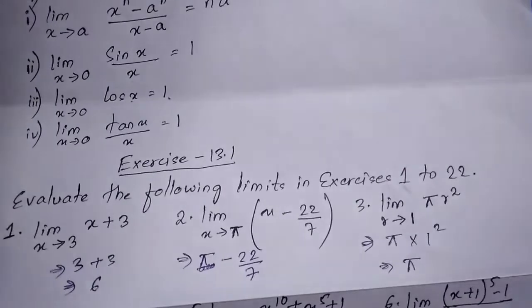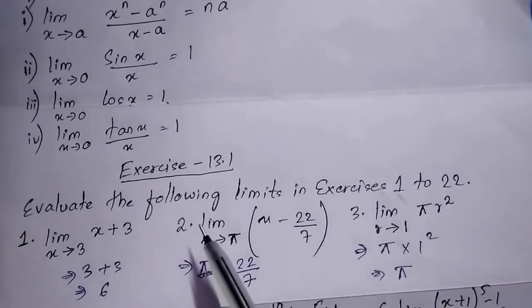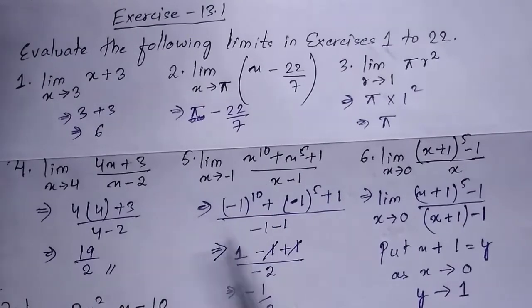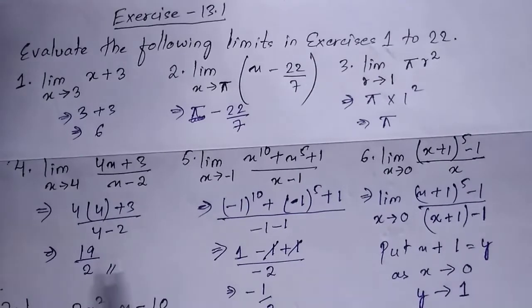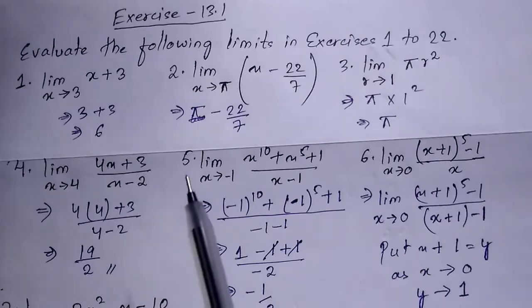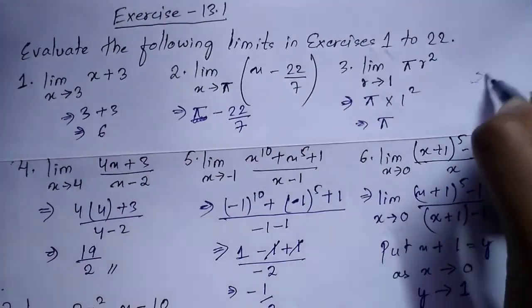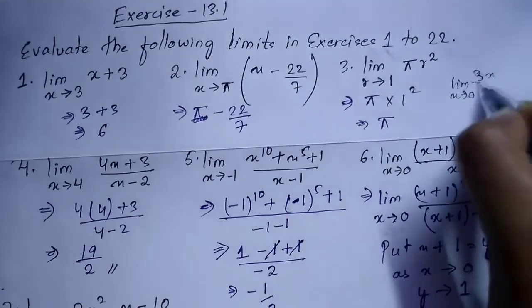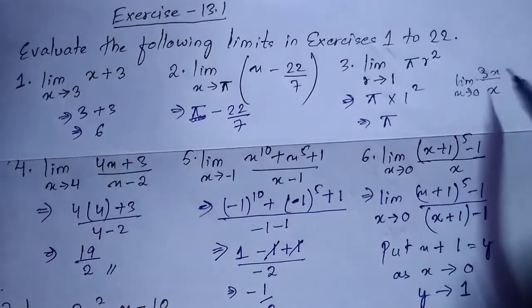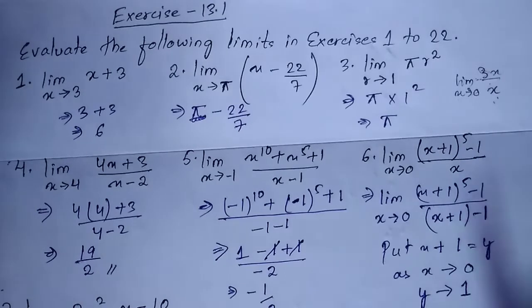Exercise 13.1 asks you to evaluate limits in questions 1 to 22 — so there are 22 questions overall. I have already solved these; I'll be explaining how the answers came about to save time. One important thing before starting: whenever a question is in fraction form, if the denominator becomes 0 when you substitute the value, you cannot directly substitute — you have to rearrange so the denominator doesn't become 0.